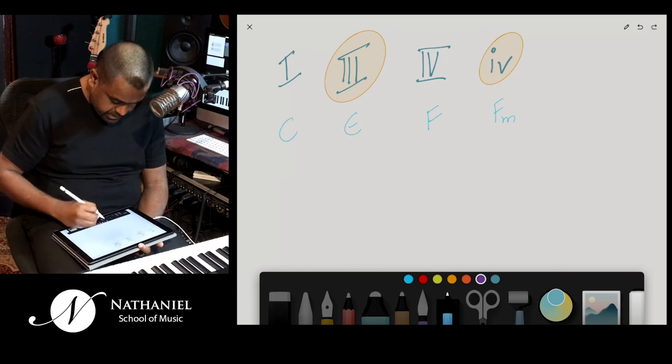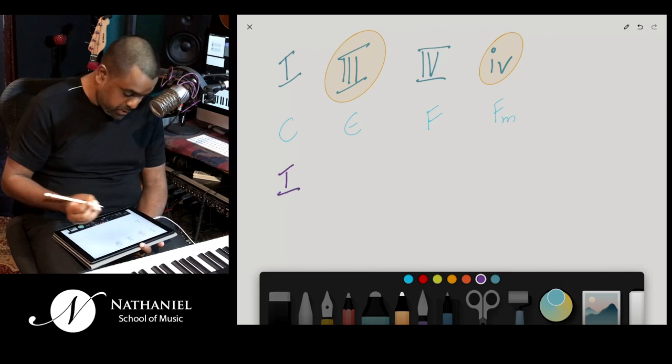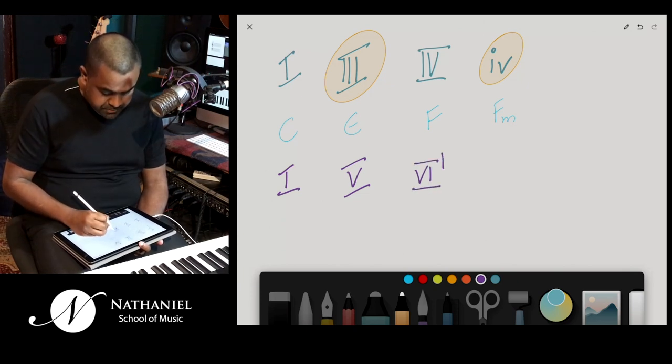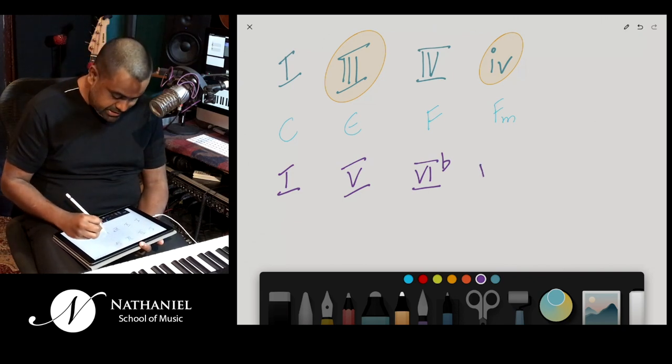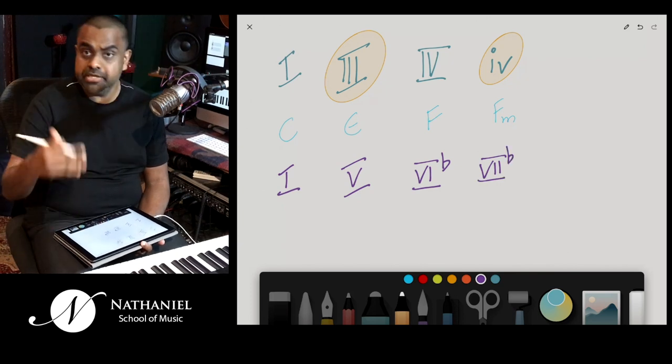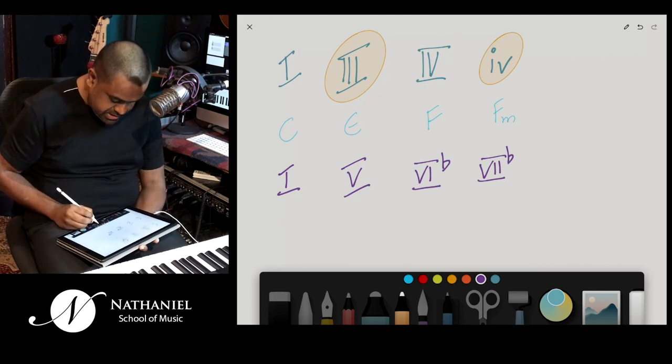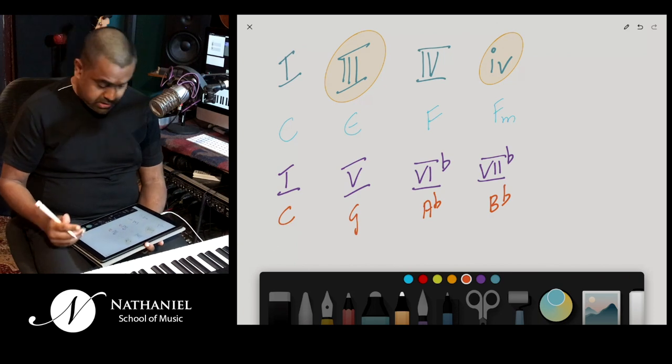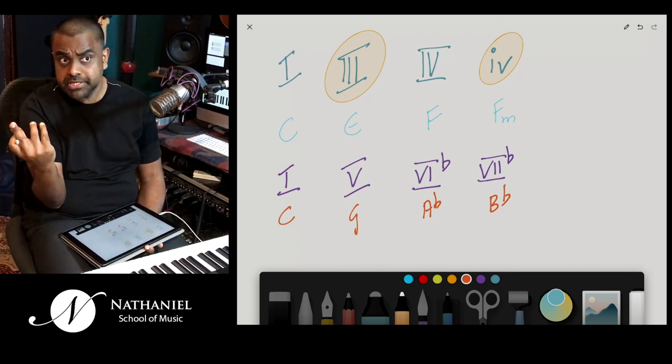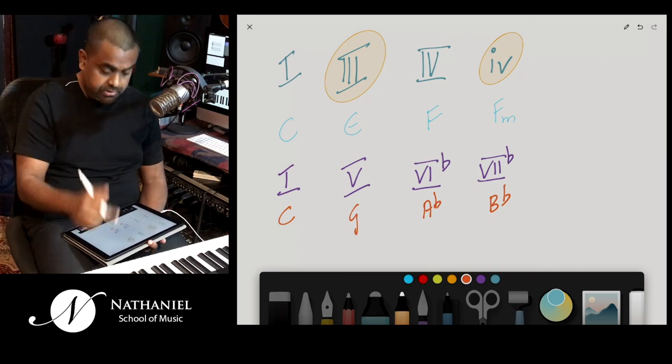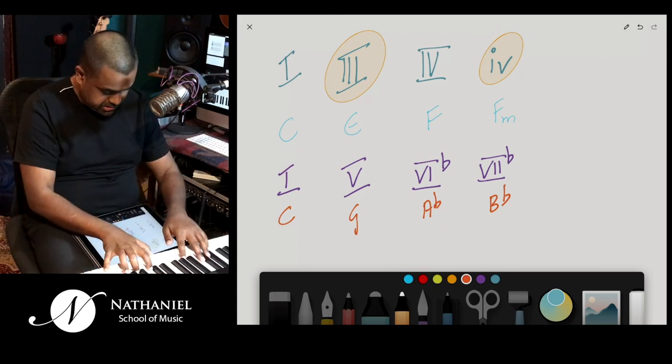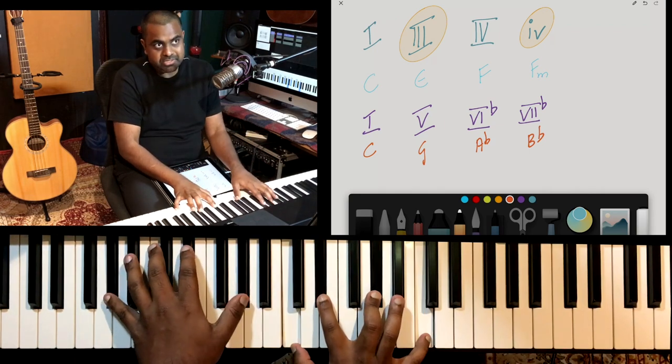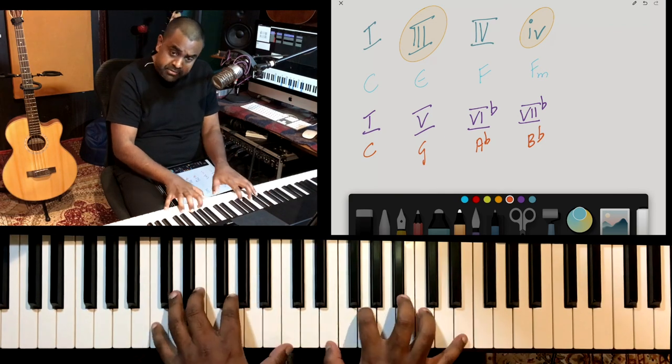However, you could also do something like this. You can take the Roman 1, maybe you can do a Roman 5, which is diatonic, and then maybe you could do something interesting. You could do a 6-flat major. Let me explain that shortly. Then you do a 7-flat major, and then you loop that and see how that works. So, if I have to spell this out for the C major domain, it would be C major, G major, A-flat major, and B-flat major. Now, how do we count that? 6-flat major sixth is what again? A. Minor sixth with respect to C, A-flat. Let's see how that works now. So, C major, G major, A-flat major, awesome chord. B-flat major, and maybe back to C.